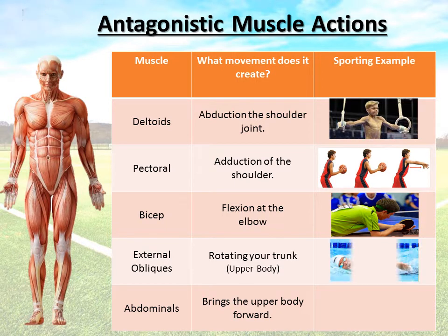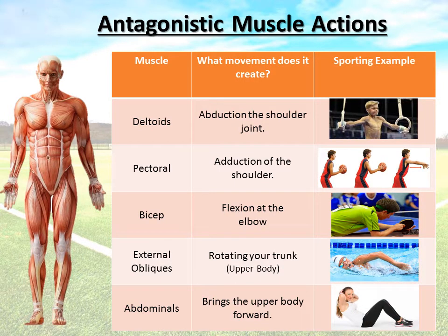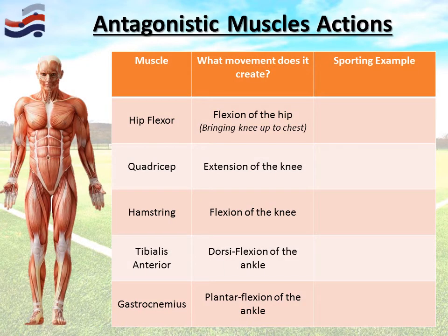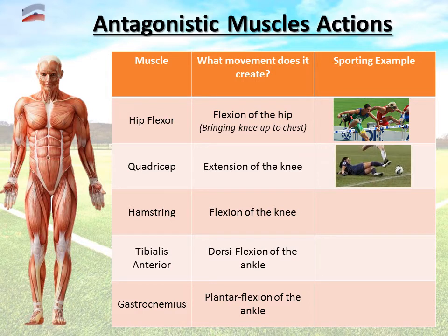The external obliques, on the outside of the abdominals down either side of the body, allow you to rotate your trunk — breathing and rotating in front crawl swimming is a good example. The abdominals allow you to bring the upper body forward, like a sit-up. The hip flexor allows flexion of the hip, bringing the knee up to the chest — hurdles is a perfect example. The quadricep allows you to straighten your leg, extension of the knee — a slide tackle in football is a good example.